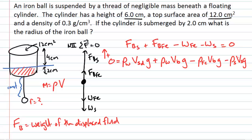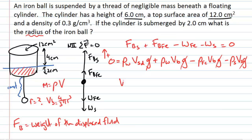In this equation, I don't yet have the radius of the iron ball explicitly. But I know the volume of a sphere is 4/3 π r³, so if I can find the volume of the ball, I can find the radius using simple geometry. Looking at the expression, G appears in every term, so I can divide both sides by G — zero divided by G is zero, and the G's all cancel — simplifying the equation.